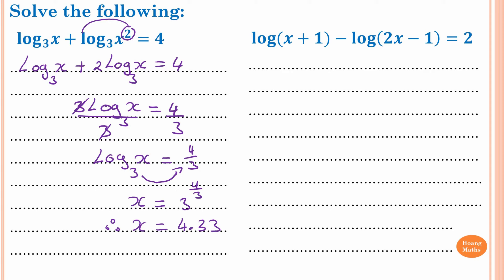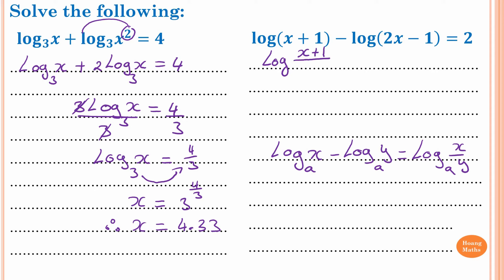So again, we know that log base a of x minus log base a of y — same base — equals log base a of x over y. So therefore the equation now becomes log of (x plus 1) over (2x minus 1), and that is equal to 2.